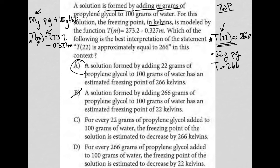Choice C, for every 22 grams of propylene glycol added to 100 grams of water, the freezing point of the solution is estimated to decrease by 266. That sounds kind of good, but the whole decrease by 266 doesn't fit with what they told us this formula actually represents. This formula represents the actual freezing point, not how much the freezing point decreases, so for that reason, C is gone.